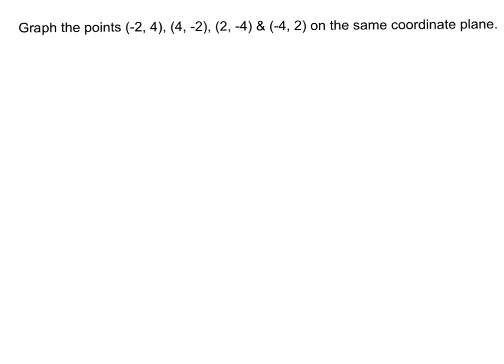Before I even start graphing, there's some things I already know about each one of my points. For instance, (-2, 4) and (-4, 2) both have negative x-values but positive y-values. So you know those are both in quadrant two.